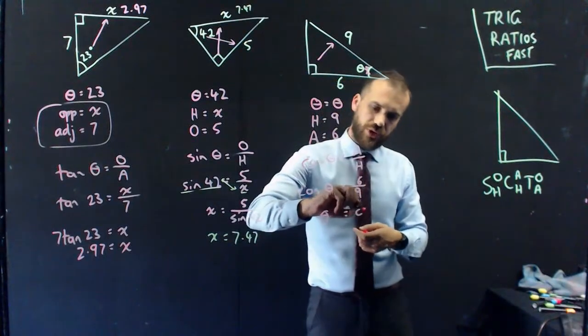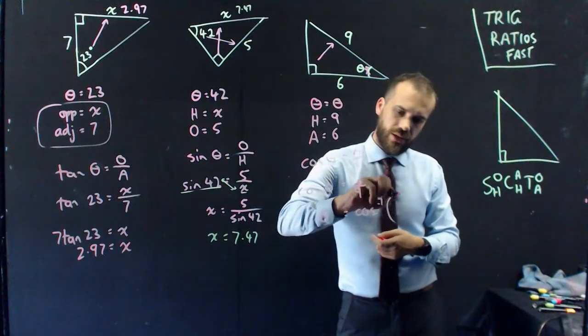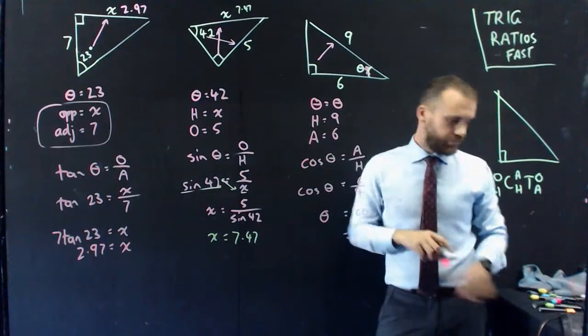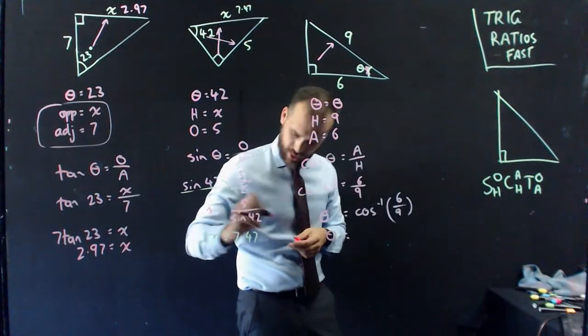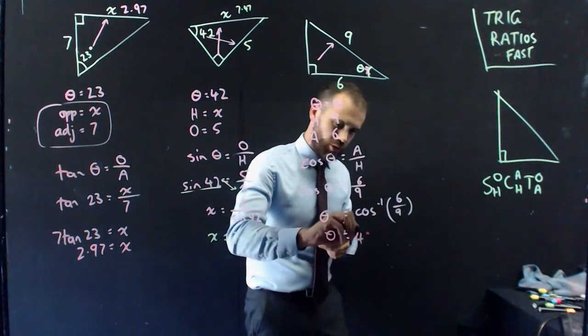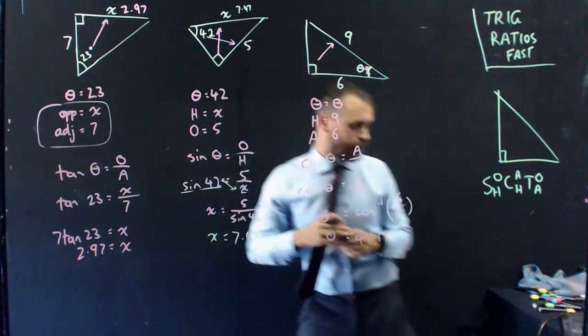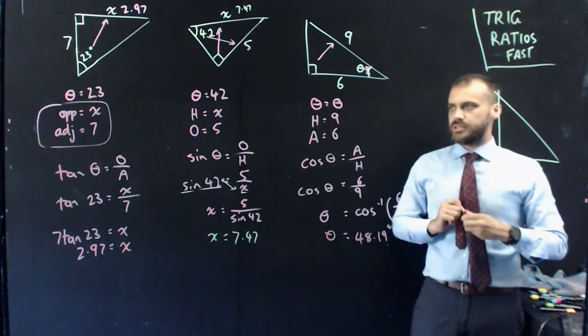Theta equals cos to the negative 1, 6 over 9. Try and find that button on your calculator. That gives me an answer of 48.19 degrees. Put it in there. Yeah, that probably makes sense.